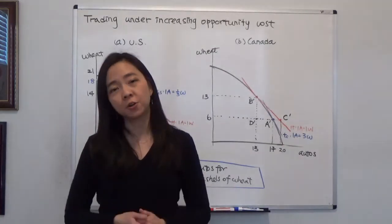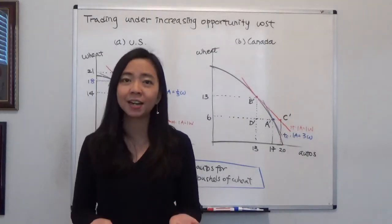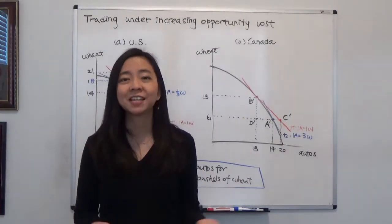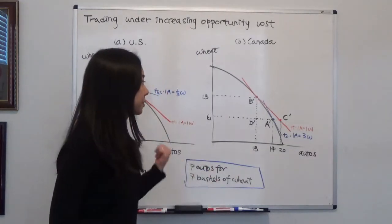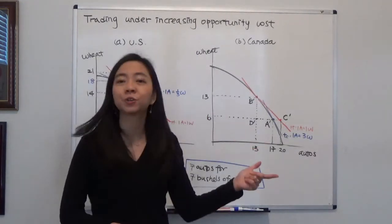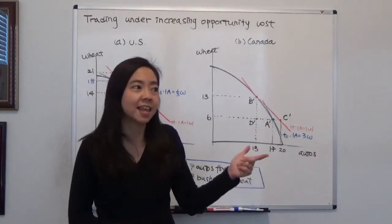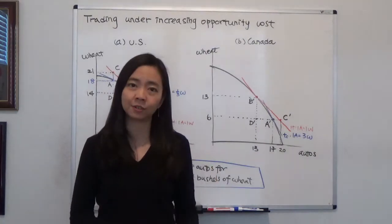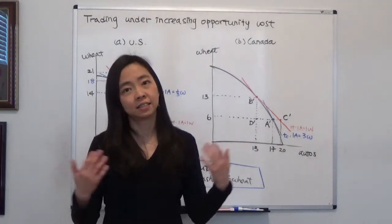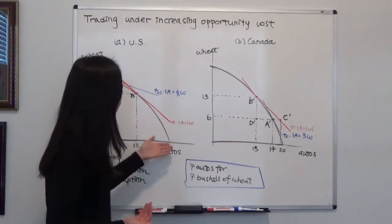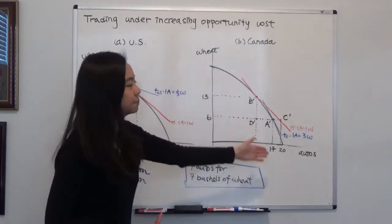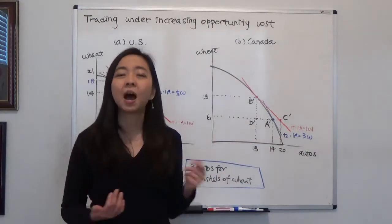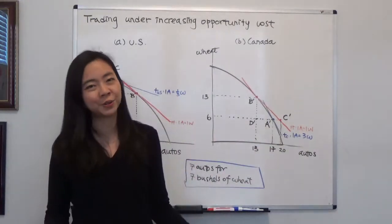In our economy, because we have different laborers with different talents, if you want to produce more of one good, eventually the opportunity cost is going to increase. As a result, we're going to have a bowed-shaped production possibility curve. So how would that change our trade theory?